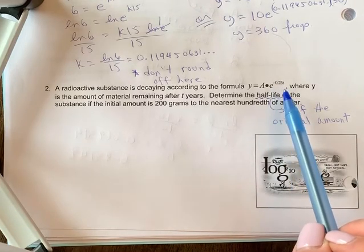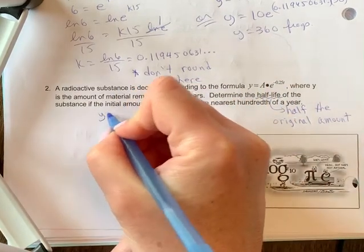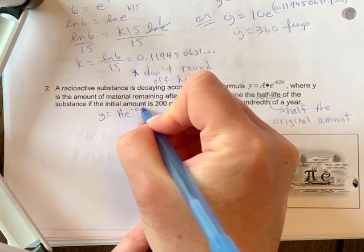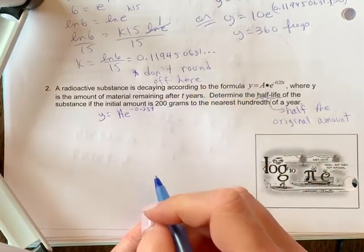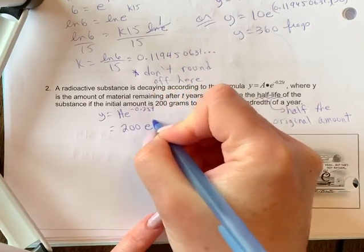So that would be a decreasing function if you were to graph this. The graph would go downwards. We're given that formula already, so let's use that. And we're given our initial amount of 200, so we're going to plug 200 in as our initial amount.